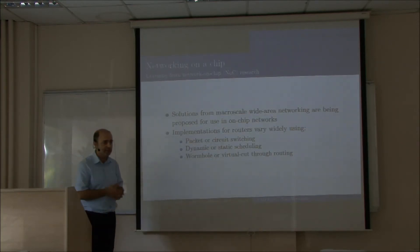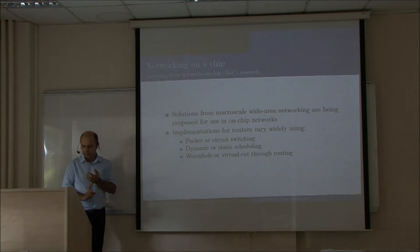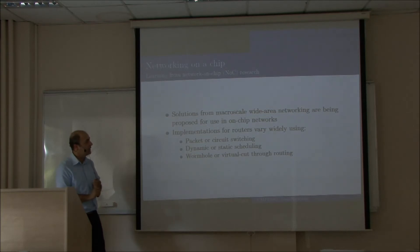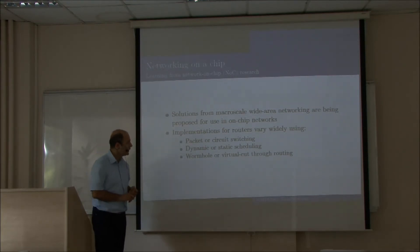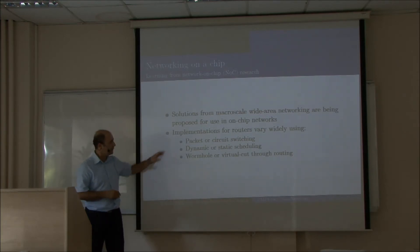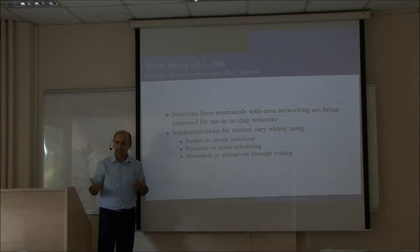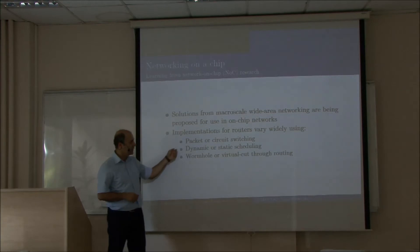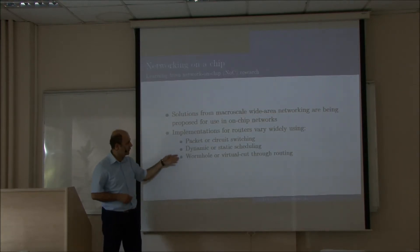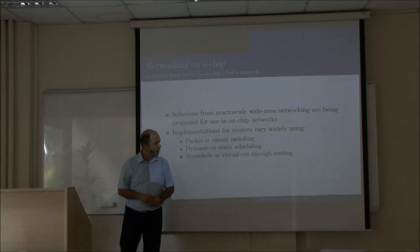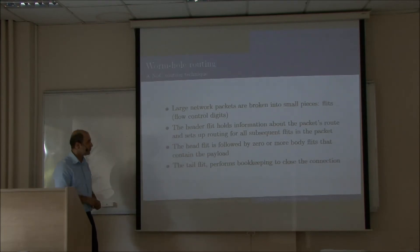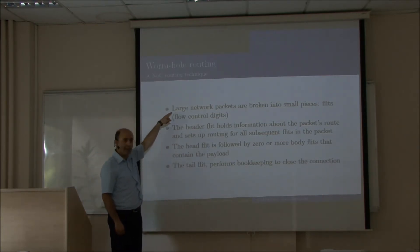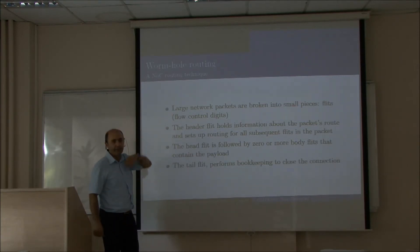Some of these challenges exist also in regular networks. Solutions from macro-scale networking can be proposed for use in on-chip networks. We have a technology called Network on Chip, or NOC for short. The implementations for routers are in different ways — as you know, we have packet or circuit switching, which is the regular thing you learn in CMP 475. There's also dynamic or static scheduling, plus concepts like wormhole routing or virtual cut-through routing. In wormhole routing, you have large network packets that you chop into very small pieces called flits — flow control digits.